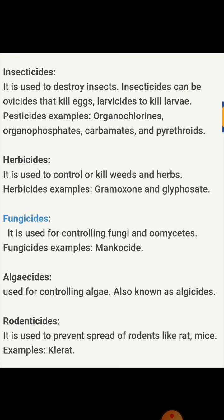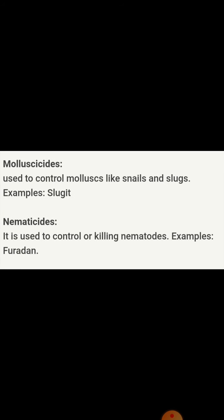Herbicides are used to kill weeds and herbs; examples are gramoxone and glyphosate. Fungicides are chemicals used to kill fungi and oomycetes; example is mancozeb. Algicides are used to kill or control algae. Rodenticides are used to prevent the spread of rodents like rats and mice; example is chlorate. Molluscicides are used to control molluscs like snails and slugs; example is slugget.